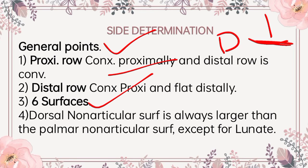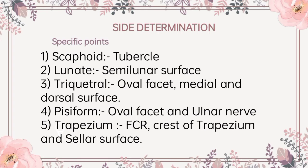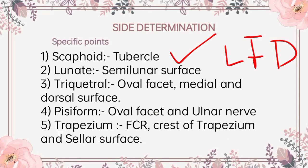Moving further to the specific points. Scaphoid: the tubercle is directed laterally, forwards and downwards. Lunate has a small semi-lunar articular surface for the scaphoid on the lateral side, and scaphoid lies lateral to lunate. Lunate's lateral side is scaphoid and the medial side is triquetral.